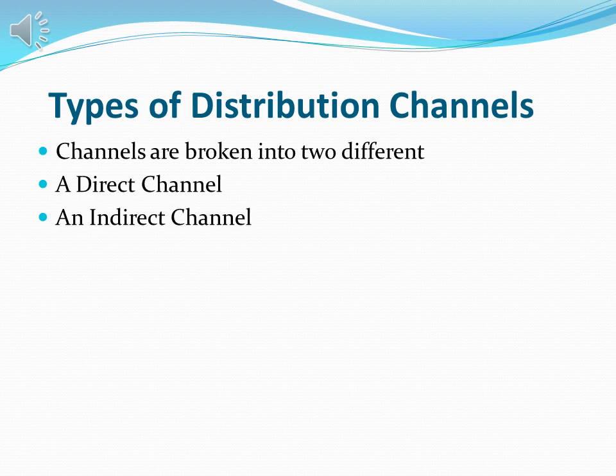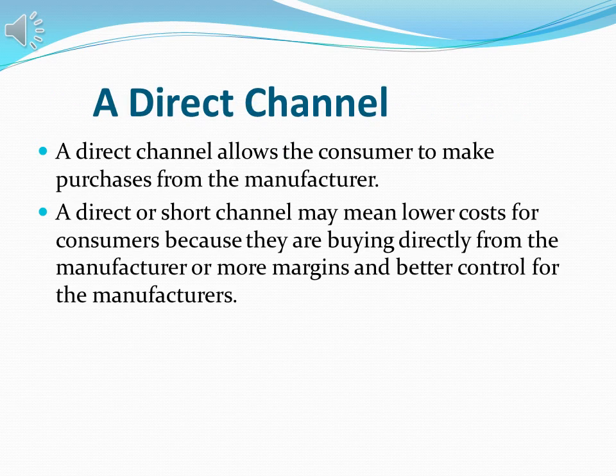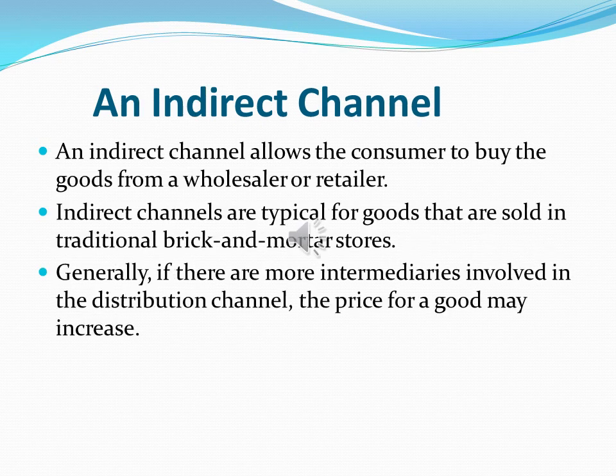There are two main types of distribution channels: direct and indirect. A direct channel allows the consumer to make the purchase from the manufacturer. A direct or short channel may mean lower cost for the consumer, since they are buying directly from the manufacturer, and more margin or better control for the manufacturer, with no intermediary involved.